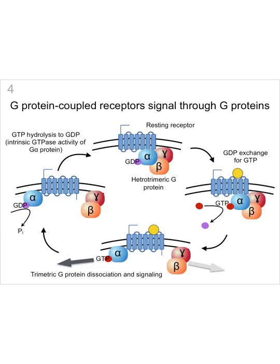In the resting state, the receptor is bound to a heterotrimeric G-protein made up of alpha, beta, and gamma subunits. The alpha subunit is bound to GDP. Upon hormone binding to the receptor, this activates the alpha subunit to exchange GDP for GTP, which is present within the cell. The GTP-bound alpha subunit then dissociates from the regulatory beta and gamma subunits, allowing it to go off and activate downstream signaling pathways. Intrinsic GTPase activity in the alpha subunit then hydrolyzes GTP back to GDP, resetting the pathway to the resting state.